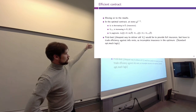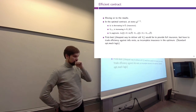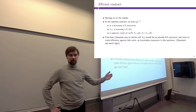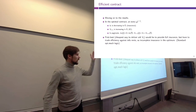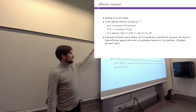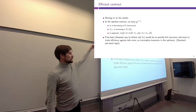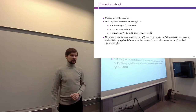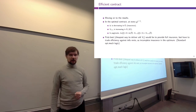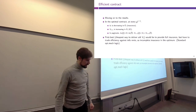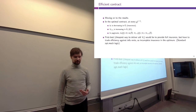In the optimal contract, payments are decreasing in the agent's current period report — the higher the income reported today, the less money received from the mechanism, which is how insurance works. For incentive compatibility, promises of future utility Vₜ₊₁ are increasing in θ̂ₜ: the larger the income you report today, the larger the utility promised in the future. However, the insurance is imperfect — variation in payments and promises of future utility is non-trivial over the type space. So the optimal contract is a partial insurance contract.